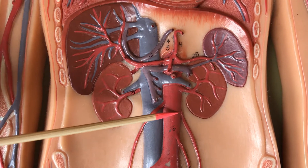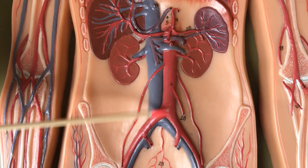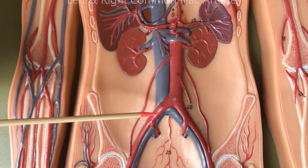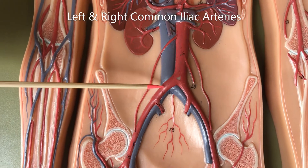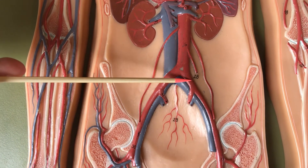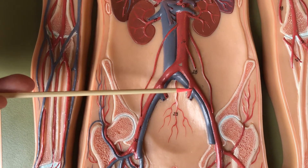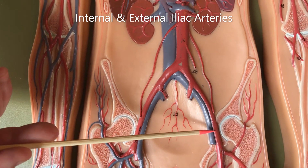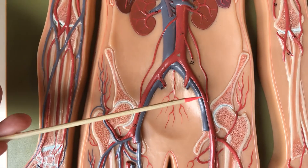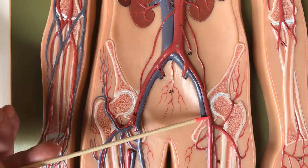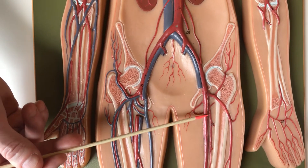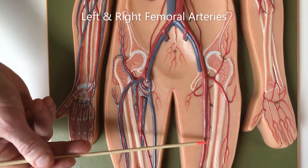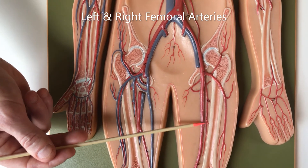After this split, we have the left and right common iliac arteries, and then we see the same split again — an internal iliac artery and an external iliac artery. The external iliac artery, once it gets down into the leg region, becomes the femoral artery — named for the femur.